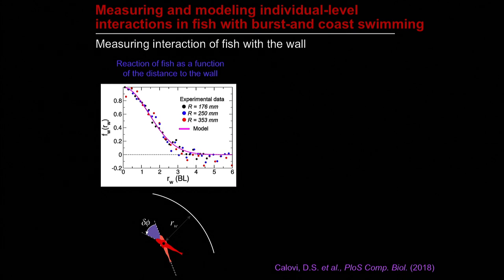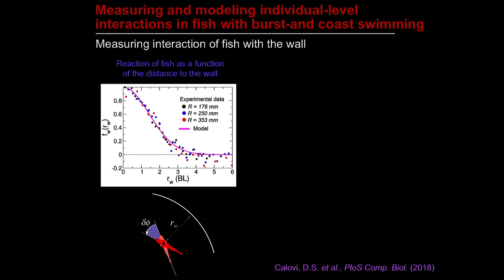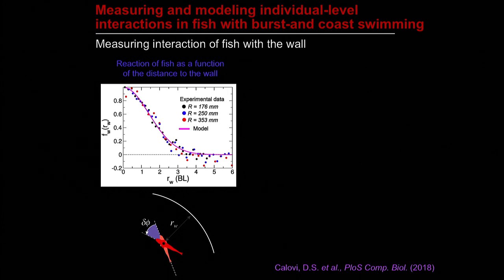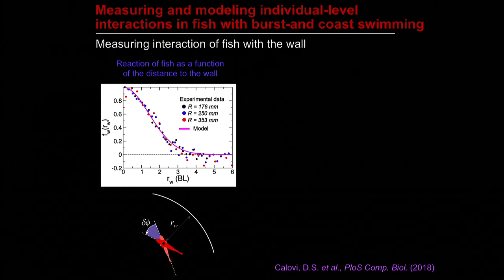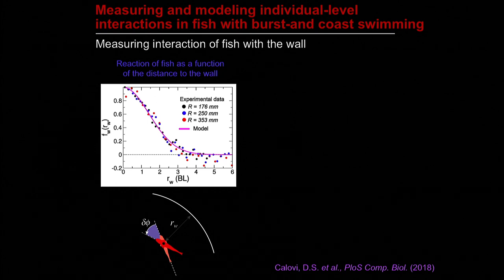The colored dots correspond to experimental data gathered in different arena sizes. You can see that the reaction of the fish does not depend on the size of the tank. The pink curve is the fitted function to this data that we use in the model.